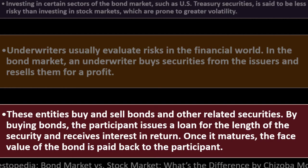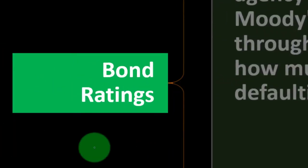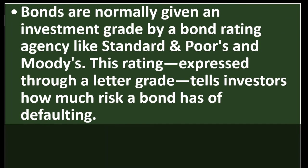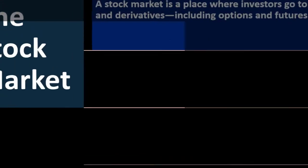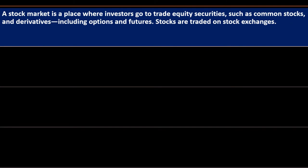Third, participants buy and sell bonds; by buying a bond, the participant issues a loan for the length of the security and receives interest in return, with the face value paid back at maturity. Bonds are normally given an investment grade by a bond rating agency like Standard & Poor's or Moody's. These letter-grade ratings tell investors how much risk a bond has of defaulting. A bond rated AAA or AA is high quality, A or BBB is medium risk, and bonds rated BB or lower are considered high risk.